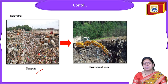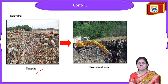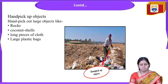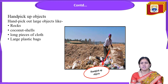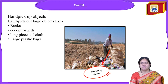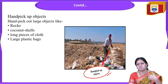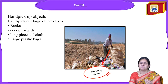Pictures show excavators doing the excavation work — waste is agglomerated and segregated, then compiled into windrows. Hand-picking of large objects is shown — workers hand-pick larger objects such as rocks, coconut shells, long pieces of cloth, and large plastic bags, which are then sent to a material recovery facility or resource recovery facility.